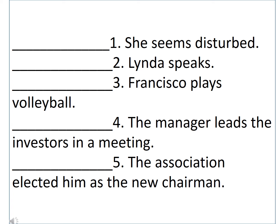Number 4: 'The manager leads the investors in a meeting.' The manager is our subject. Leads is the verb. The investors is our indirect object. And in a meeting is our direct object. So the answer is SVIODO. Number 5: 'The association elected him as the new chairman.' The association is our subject. Elected is our verb. Him is our indirect object. And the new chairman is our direct object. So this sentence follows the SVIODO pattern.